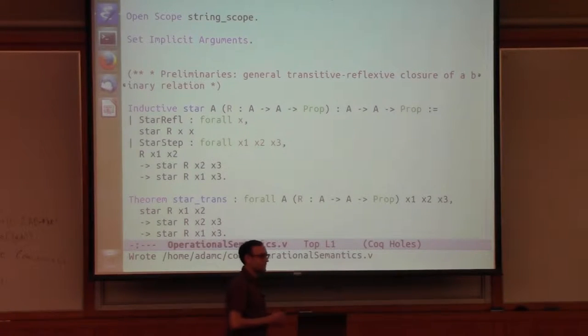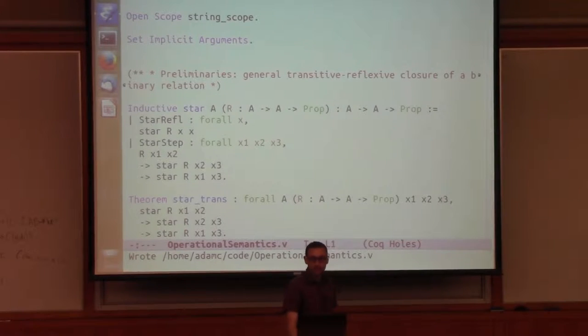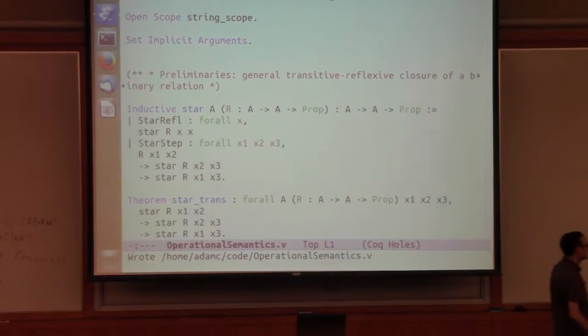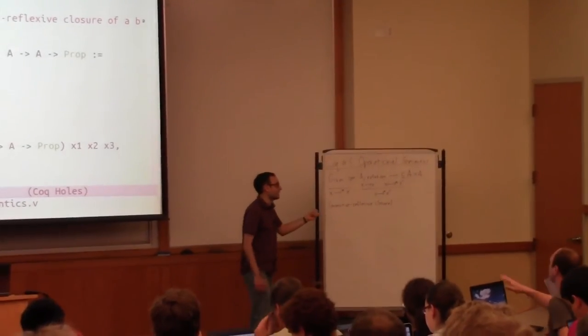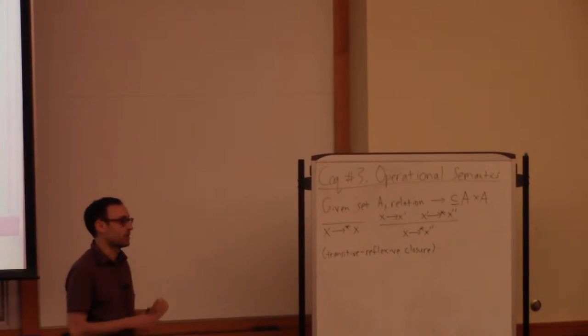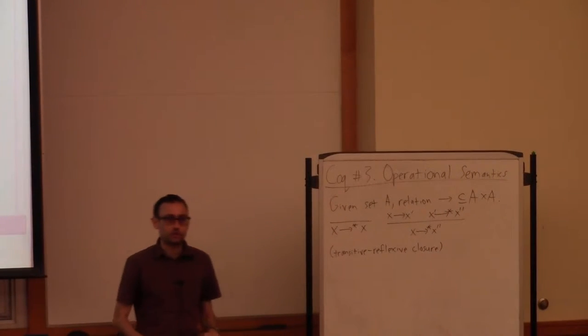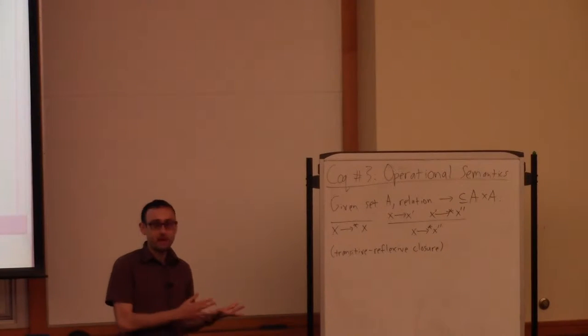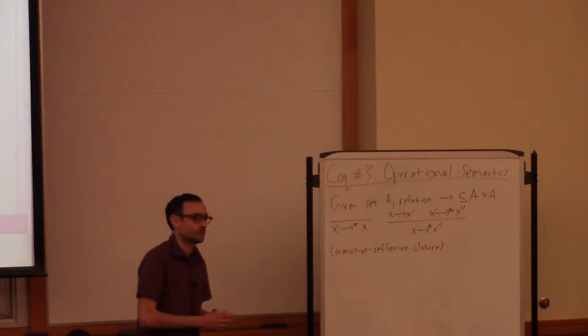To set the stage for that, I need to show a generalization of a relation that we defined last time. This is the general idea of the transitive reflexive closure of a relation. I've written it over here in standard inference rule notation. If we have any relation, it's a binary relation over some arbitrary set A, and I'm writing the relation as a right arrow symbol to express the intuition of stepping from one state to another. We define the transitive reflexive closure by two rules, and there are actually many different sets of rules that define the same relation. This version happens to be the most convenient for the proofs that I'm doing.